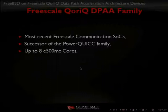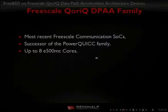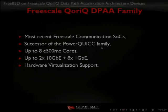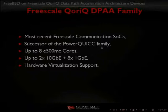In this new family we have chips with up to 8 E500MC cores, up to 2 10-gigabit interfaces and 8 1-gigabit interfaces, so we have very high packet rate. These SoCs also support virtualization — not only in the cores, but the interconnect and peripherals are also prepared for that, including the data path acceleration architecture.